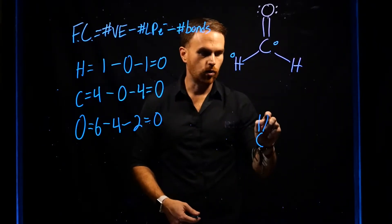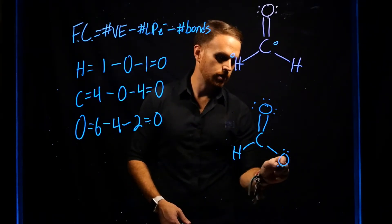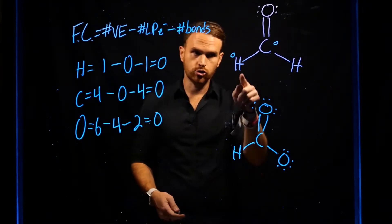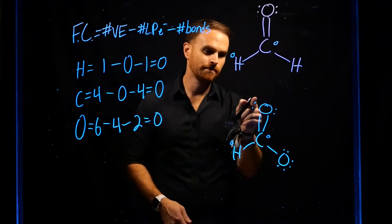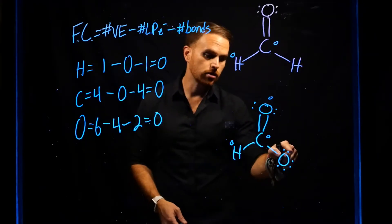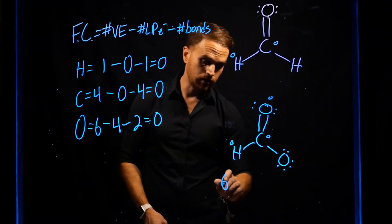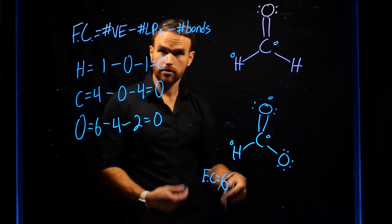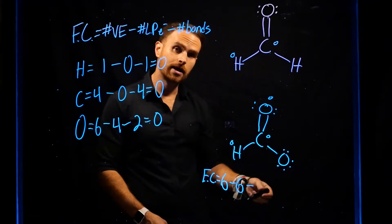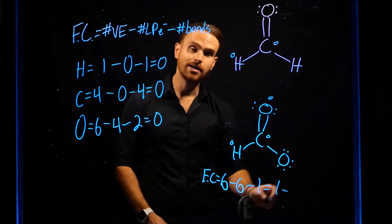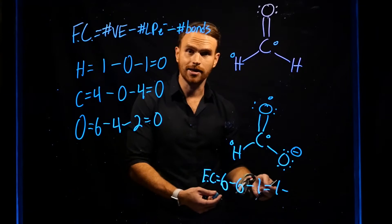An example of a molecule where atoms don't have a formal charge of zero is formate. Hydrogen and carbon would again have a zero formal charge, and one of the oxygens would also have a zero formal charge. However, notice that the other oxygen looks a little different. For that oxygen: 6 valence electrons, 6 lone pair electrons, and 1 chemical bond — giving this oxygen a formal charge of 1 minus, which we place next to the atom and circle to indicate a formal charge of −1 around that oxygen.